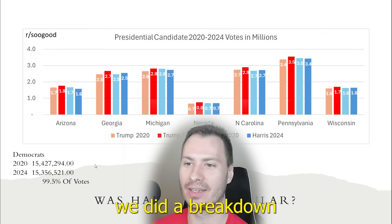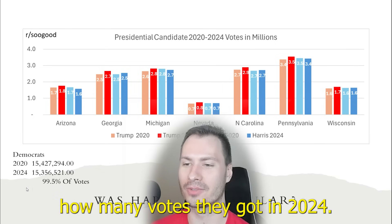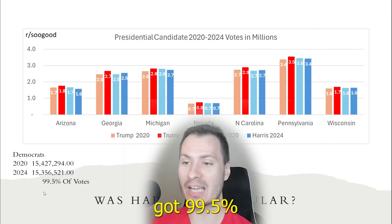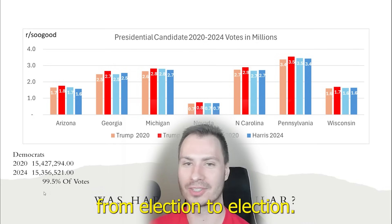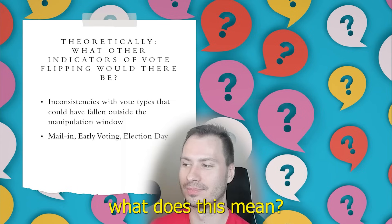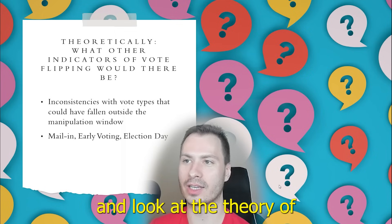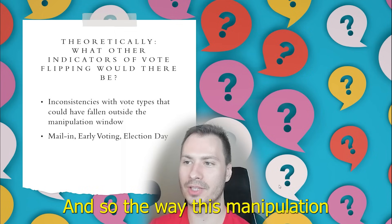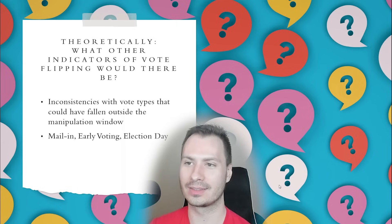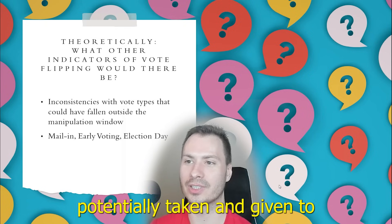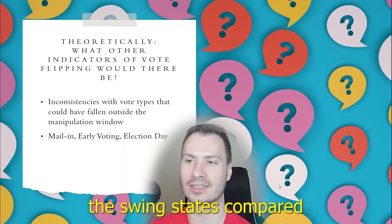To further cement that, we did a breakdown of how many votes the Democratic president got in 2020 versus 2024. Candidate Harris got 99.5% of the votes that were cast in 2020 — 99.5% of the Democratic base from election to election. This would somewhat discredit the theory that she was unpopular in the swing states. Instead, this would make us turn and look at the theory of manipulation. The Democratic base would have had to have grown significantly, and then every vote above that threshold of 2020 votes could have been potentially taken and given to the Republican candidate. That would explain that difference in drop-off votes we're seeing across the swing states.